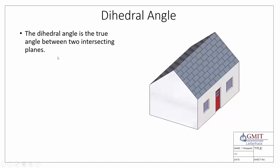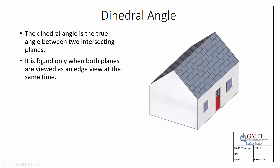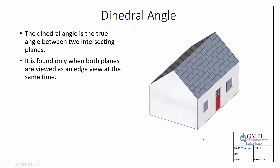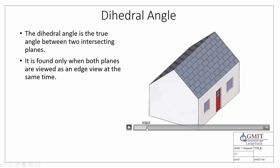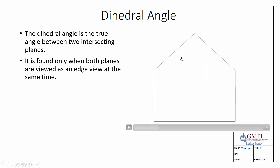The dihedral angle is the true angle between two intersecting planes, and it's found only when both planes are viewed as an edge view at the same time. Taking the example of two roof surfaces — roof surface one and roof surface two at the back — instinctively, if we want to find the true angle between the two roof surfaces, we have to walk around to the side and look in at the gable end of the roof.